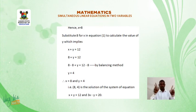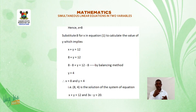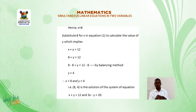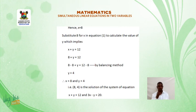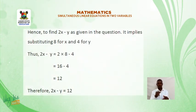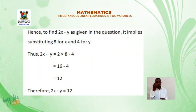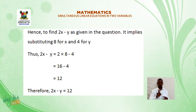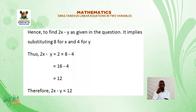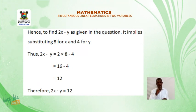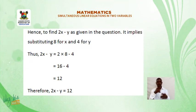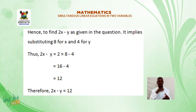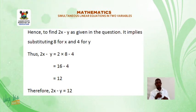That is, (8, 4) is the solution of the system of equations x plus y is equal to 12 and 3x minus y is equal to 20. Hence, to find 2x minus y as given in the question, it implies substituting 8 for x and 4 for y. Thus, 2x minus y is equal to 2 times 8 minus 4, which is equal to 16 minus 4, which is equal to 12. Therefore, 2x minus y is equal to 12.